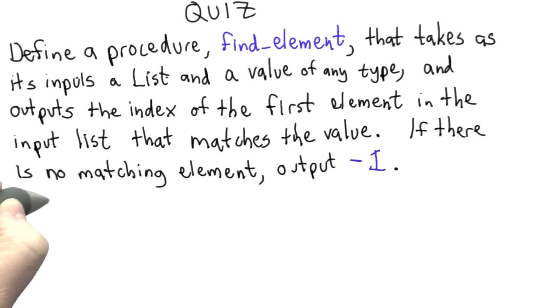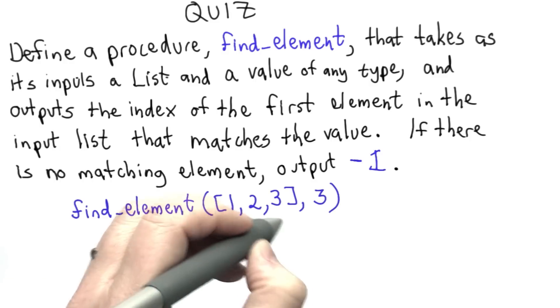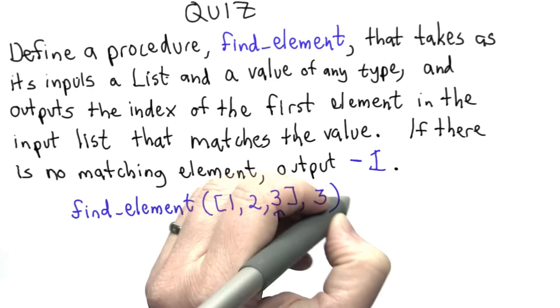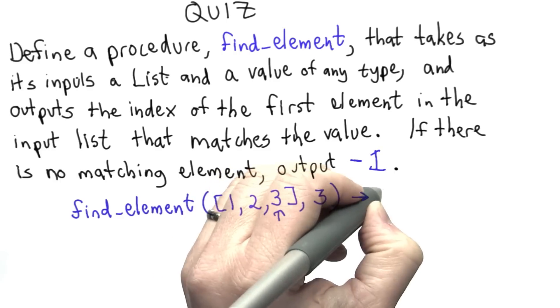So here's a few examples. If we call find_element passing in as the list the list [1, 2, 3], and passing in as the value to match the number 3, we find the match here, which is position 2. So the output should be 2.